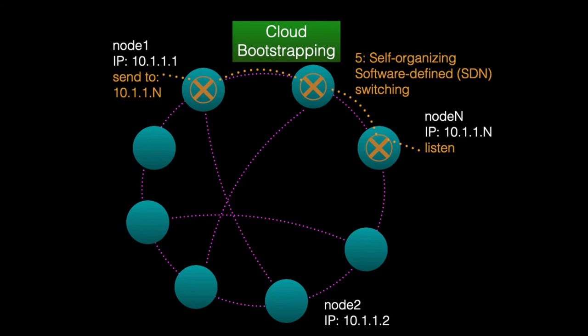The SDN switches allow a message from node 1 to hop through an intermediary node and be delivered to node N. These rules are implemented in an OpenFlow-enabled software-defined switch called OpenVSwitch running on every node, automatically added by EVO without any administrative intervention. Not only is the topology self-organizing and self-configuring, but the switching rules are as well.